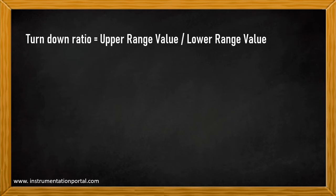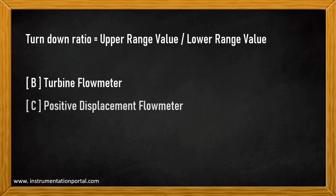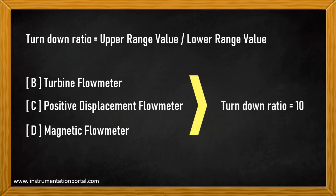Turndown ratio is the ratio of upper range and lower range value. Turndown ratio is also known as rangeability. Most turbine flow meters, positive displacement flow meters, and magnetic flow meter products in the market have a turndown ratio of 10, even more for some special products.